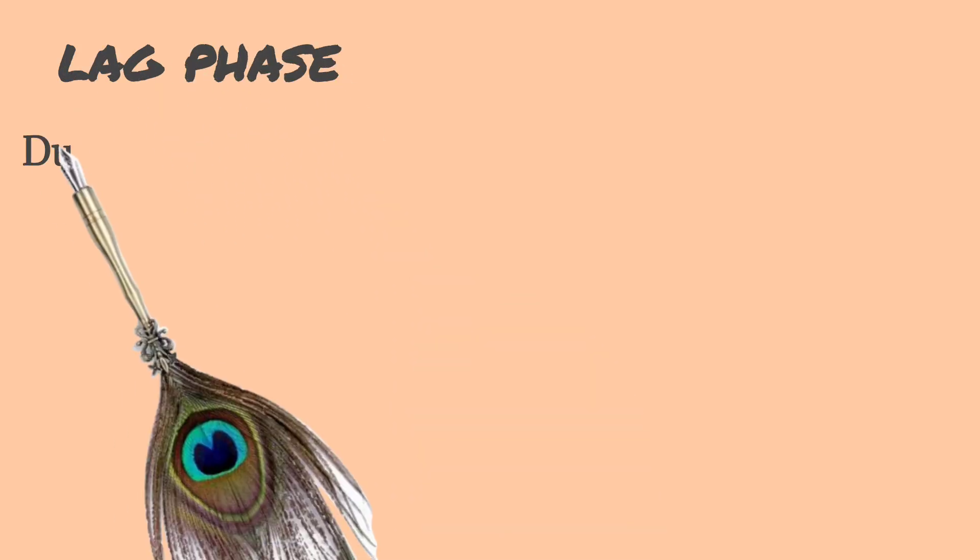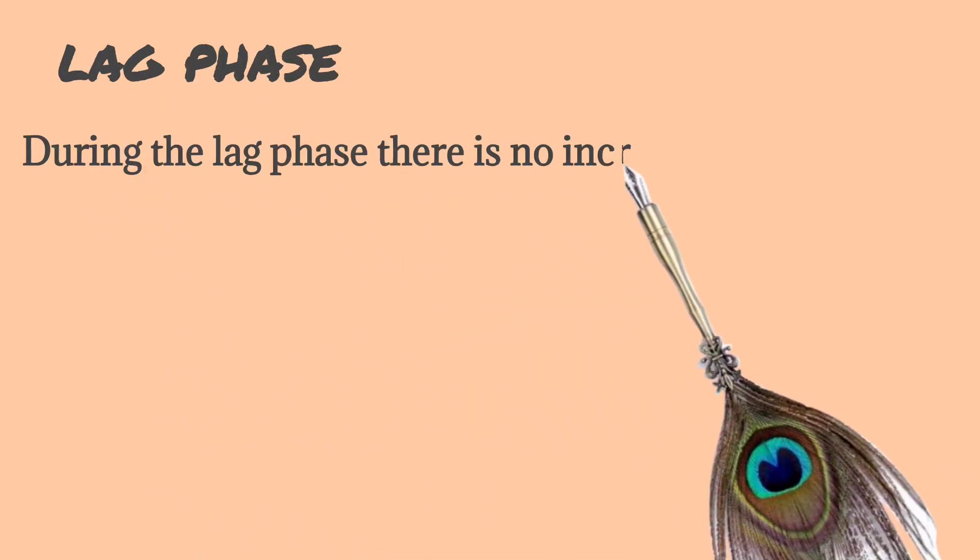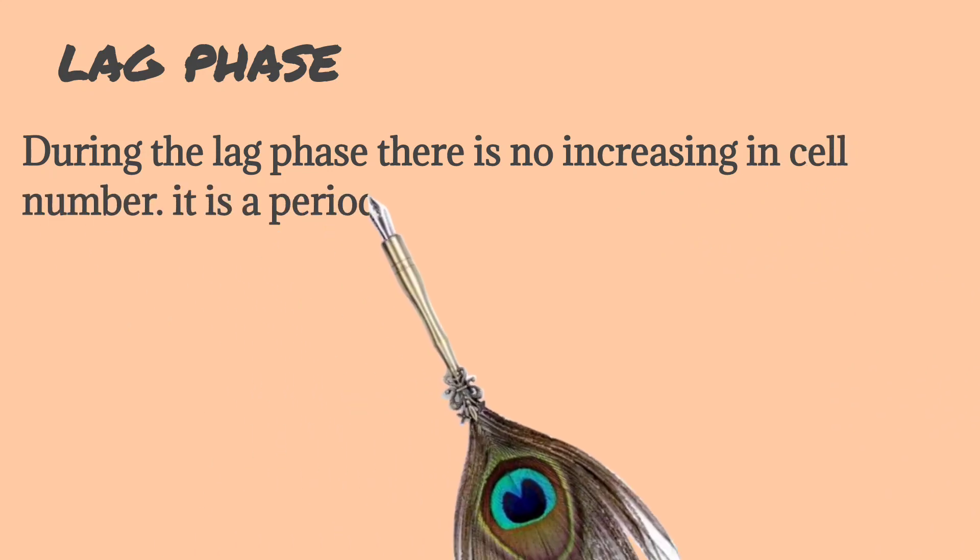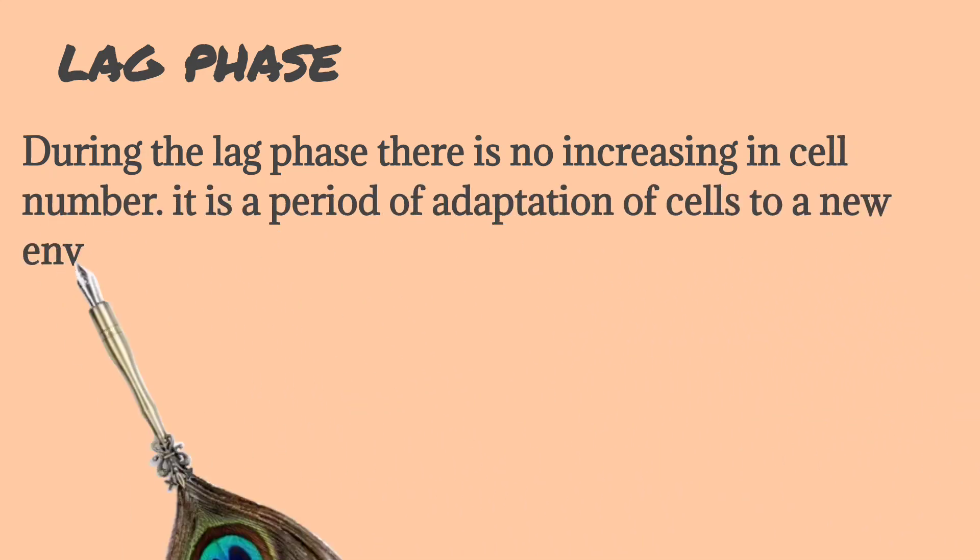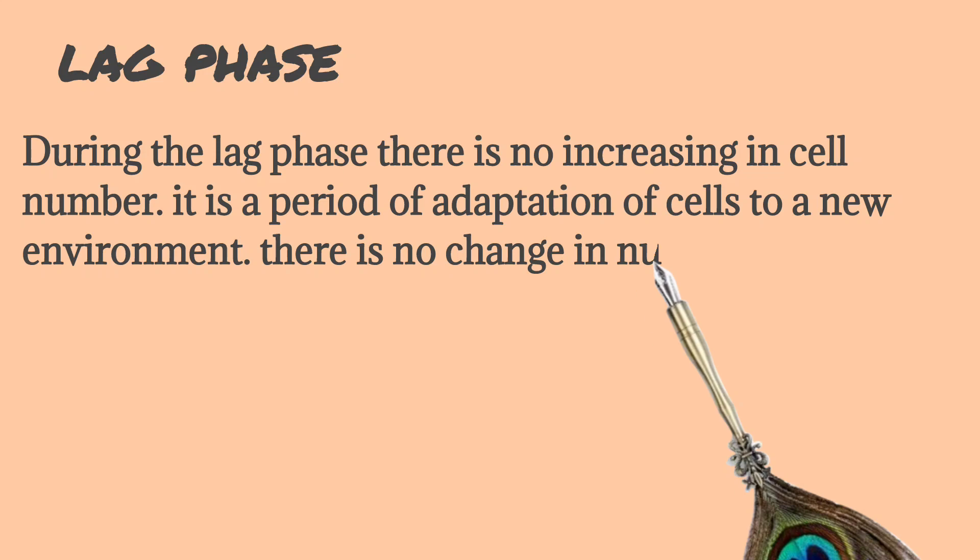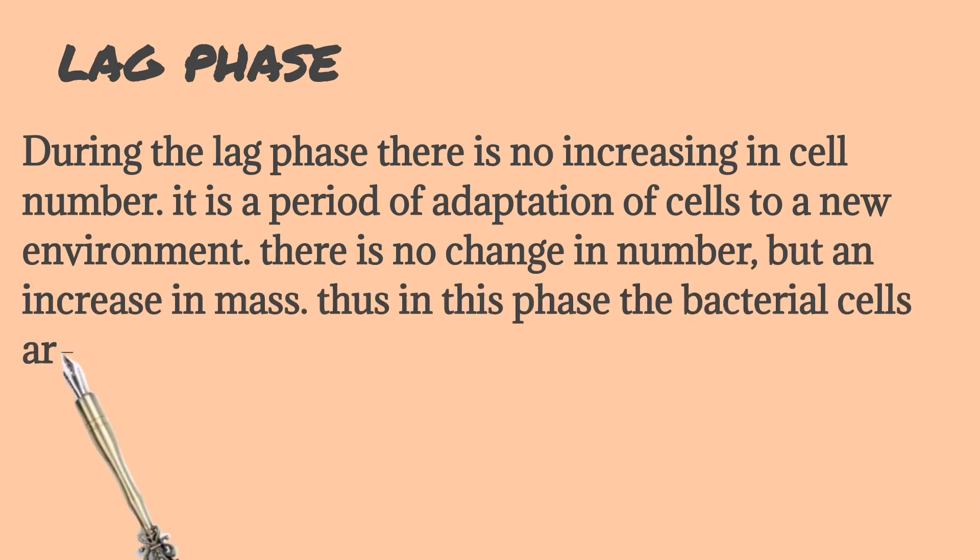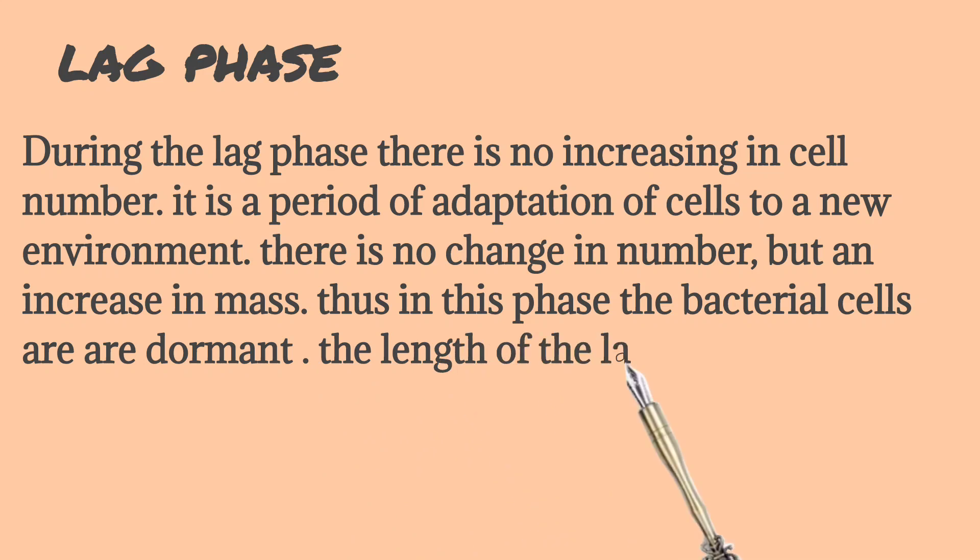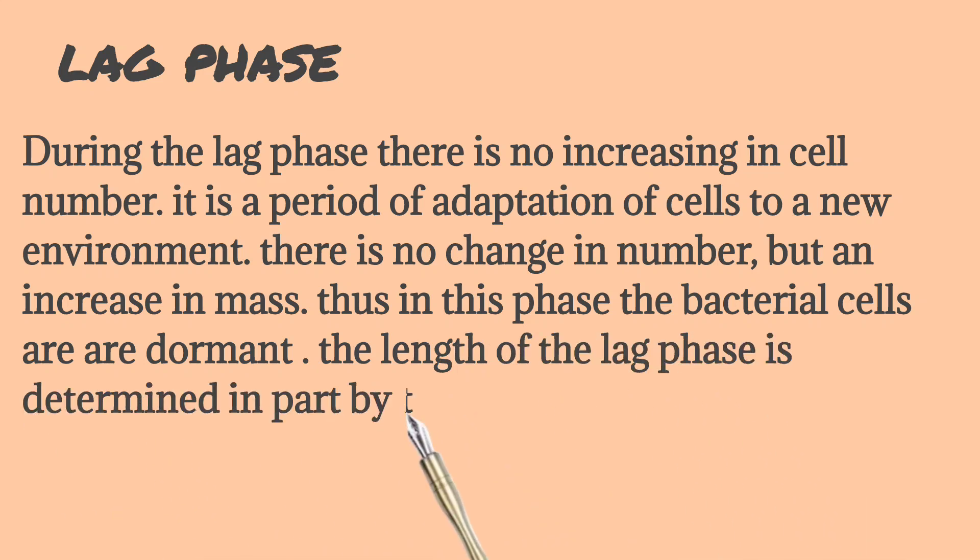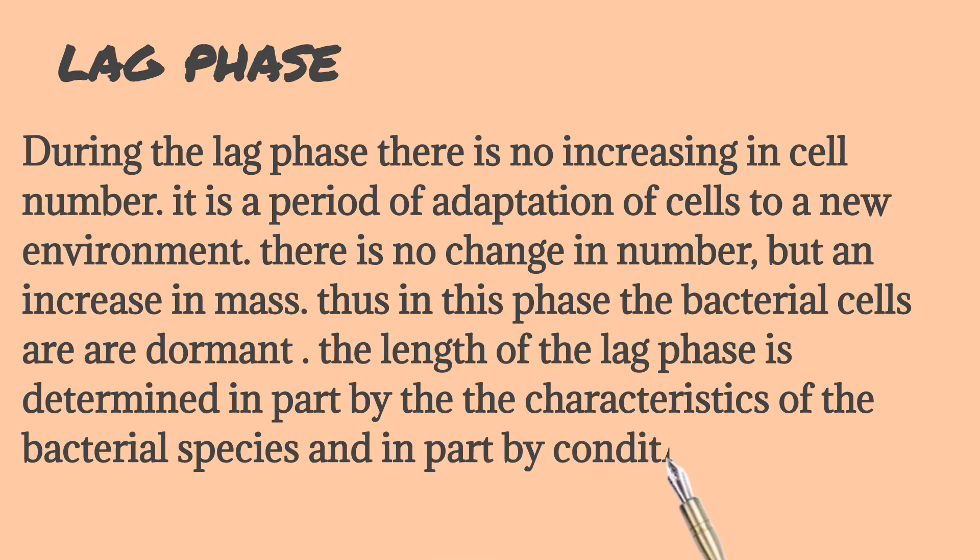The lag phase. During the lag phase, there is no increase in the cell number. It is a period of adaptation of the cell to a new environment. There is no change in number but an increase in mass. Thus, in this phase, the bacterial cells are dormant. The length of the lag phase is determined in parts by the characteristics of the bacterial species and in parts by conditions in the media.